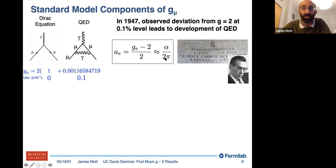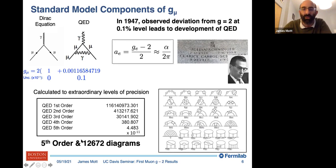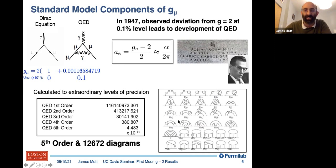Since then there's been a real challenge to the theory. This QED term has been calculated to extraordinary levels of precision — it's now out to fifth order with 12,000 diagrams. Here's just a selection of them. When you start seeing Feynman diagrams that look like this and think people have calculated this, it's absolutely crazy. These are the kinds of diagrams that get calculated, and you end up with a really small uncertainty from this large number.